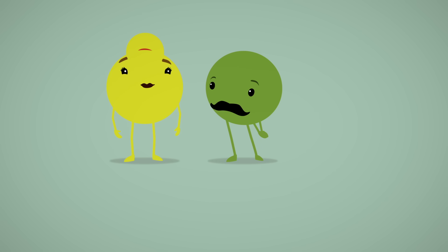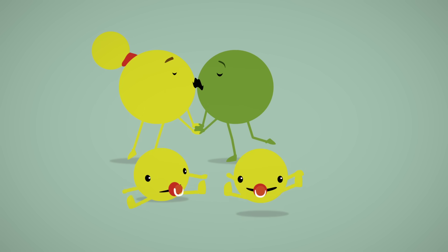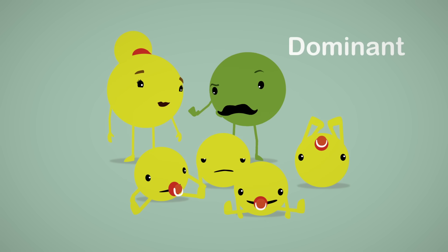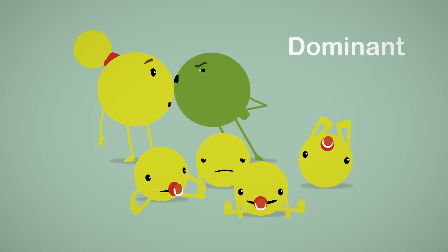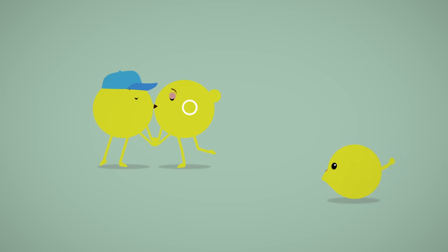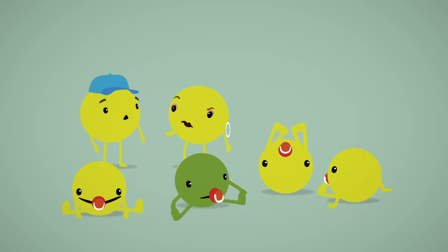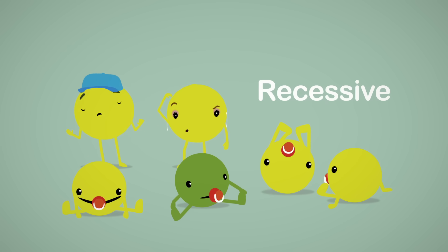In one of the most classic examples, Mendel combined a purebred yellow seeded plant with a purebred green seeded plant, and he got only yellow seeds. He called the yellow color trait the dominant one because it was expressed in all the new seeds. Then he let the new yellow seeded hybrid plants self-fertilize, and in this second generation he got both yellow and green seeds, which meant that the green trait had been hidden by the dominant yellow. He called this hidden trait the recessive trait.